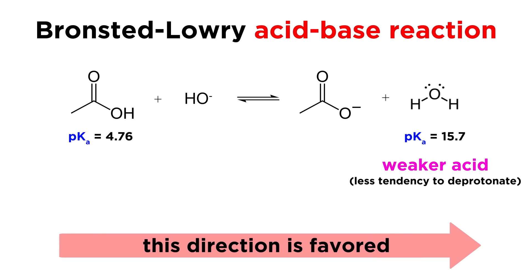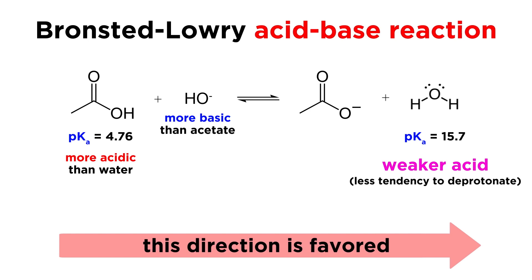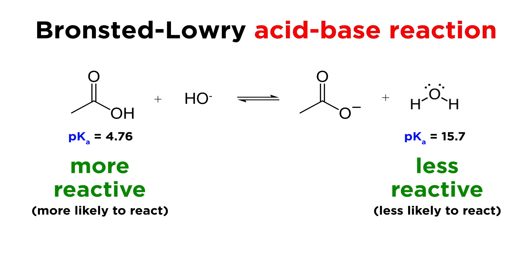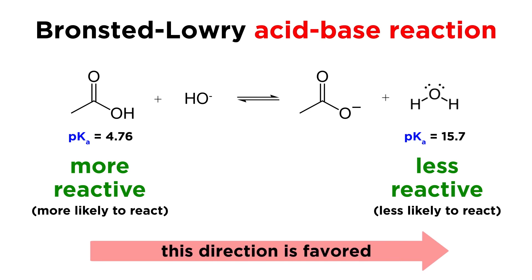So the species on the right side will dominate the product mixture. There will be a lot more acetate than acetic acid, because acetic acid is so much more acidic than water, and also because hydroxide is so much more basic than acetate. Another way of saying this is that water is much less reactive than acetic acid. If it's much less reactive, then it is less likely to react with the acetate ion and produce the species on the left, so the species on the right will predominate.